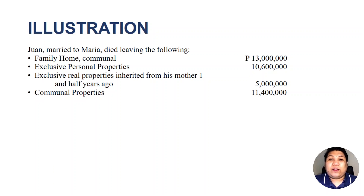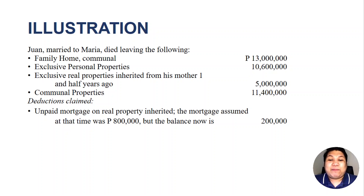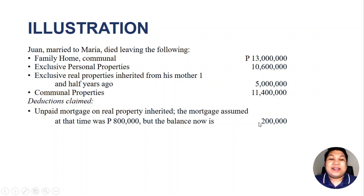We also have communal properties of 11,400,000 pesos, and deductions claimed. There is an unpaid mortgage on the real property inherited — the mortgage assumed at that time was 800,000 pesos, but the balance at the time of his death is 200,000 pesos. So the real properties inherited from his mother one and a half years ago were already subjected to estate tax at the time of inheritance. At that time the mortgage assumed by Juan was 800,000 pesos, but after one and a half years the balance is only 200,000 pesos. Therefore, Juan has already paid a total of 600,000 pesos.